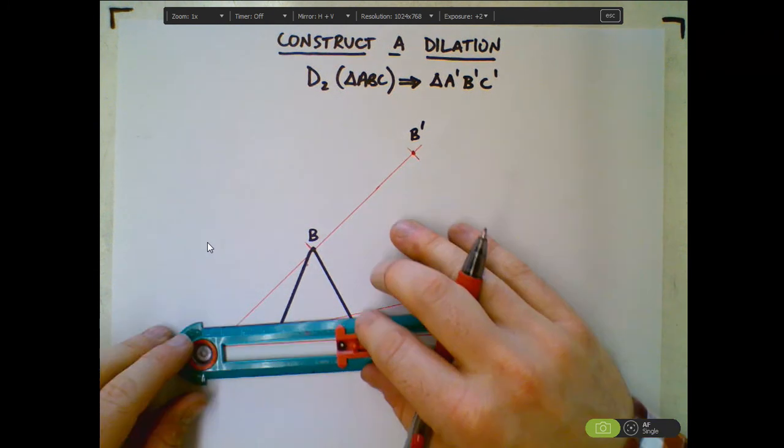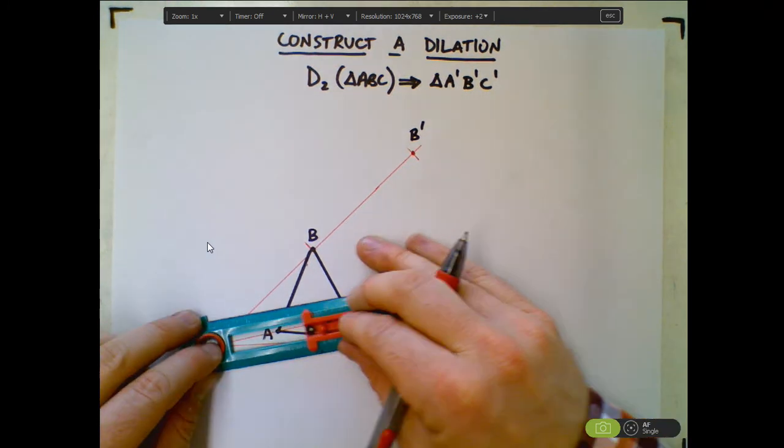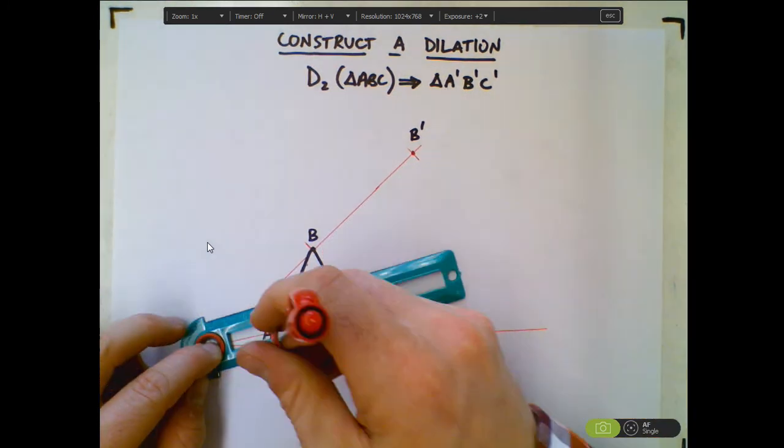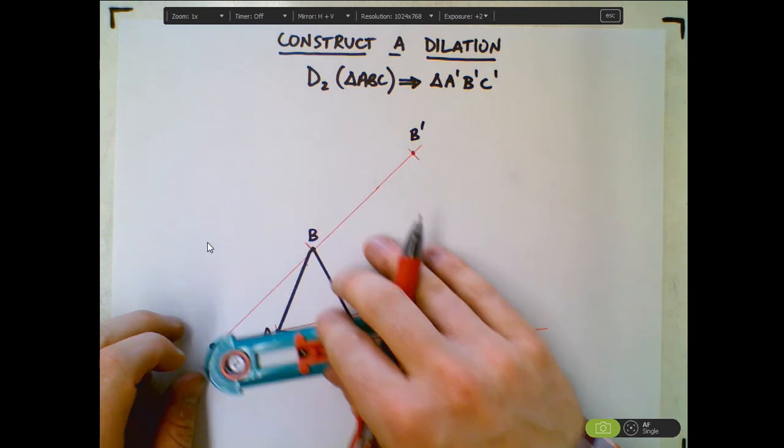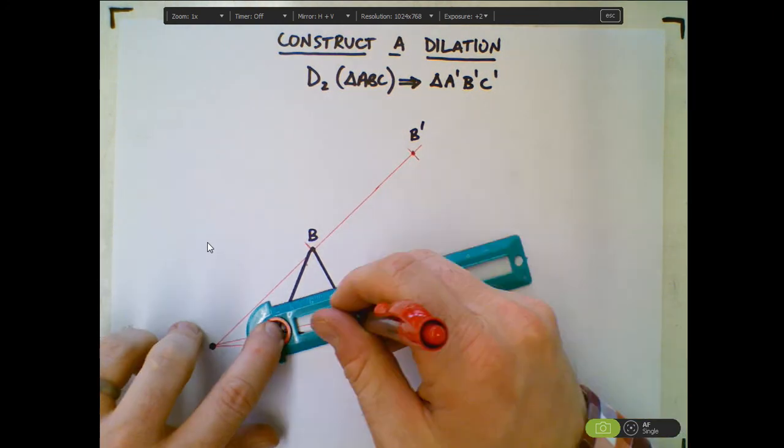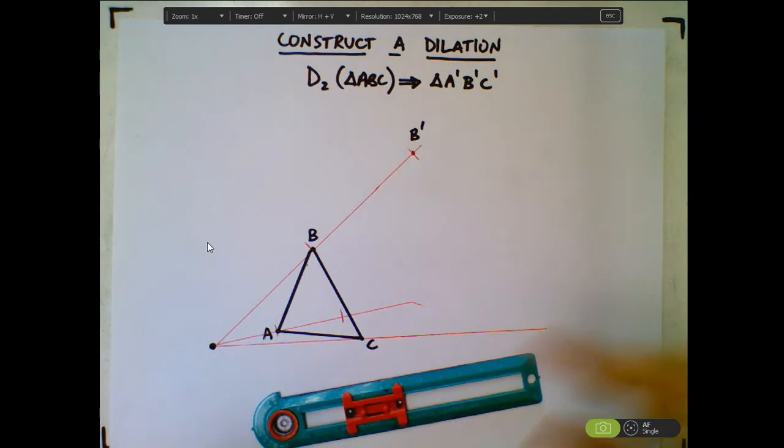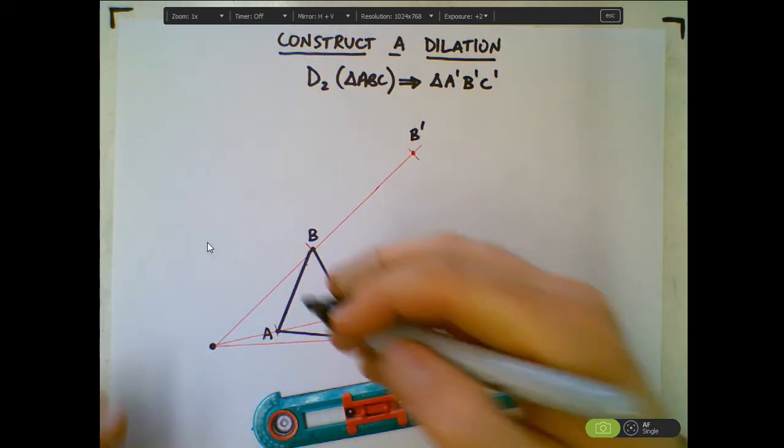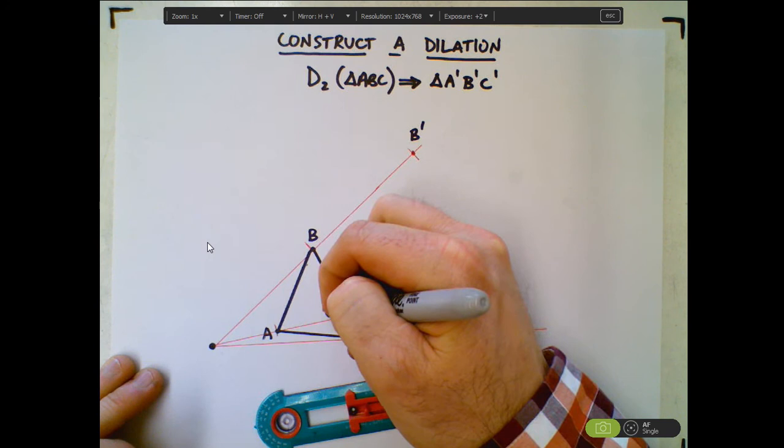And then again from A, this is a much shorter distance. So there's the center to A, and I want to double that distance. So here's going to be A'.